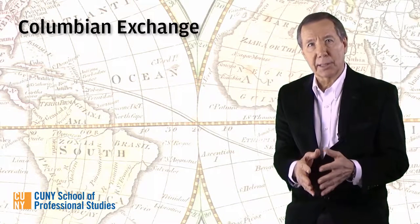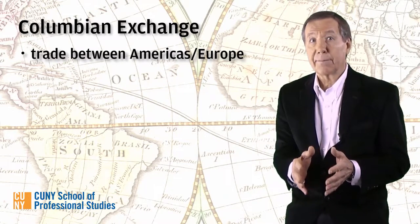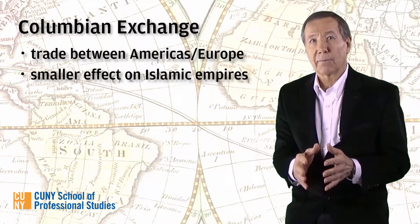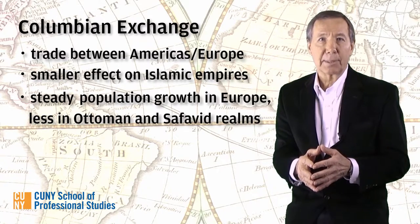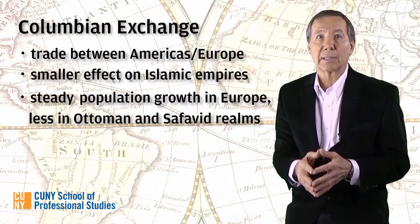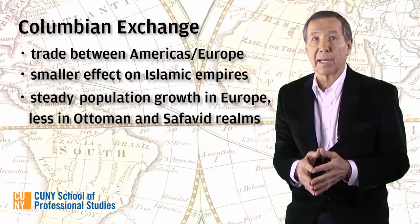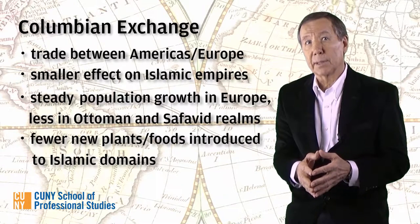The Columbian Exchange — that is, trade between the Americas and Europe — had an effect on the Islamic empires as well, but it's less significant. From 1500 to 1800, the population of Western Europe grew steadily as the Columbian Exchange increased, while population growth in the Ottoman and Safavid empires was far less dramatic, testifying to the smaller impact of the Columbian Exchange. The Islamic empires did not experience the extensive introduction of new foods and plants that one finds, for example, in Western Europe or in East Asia.